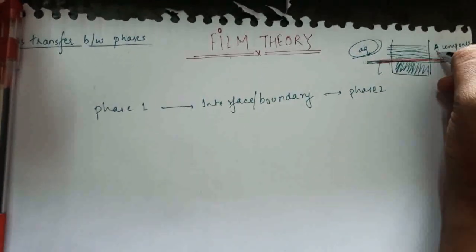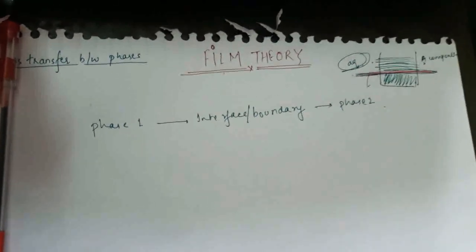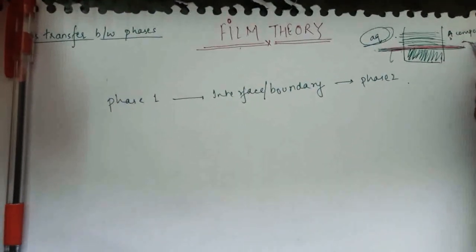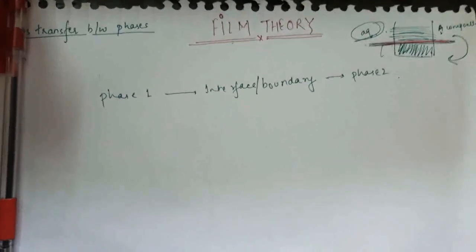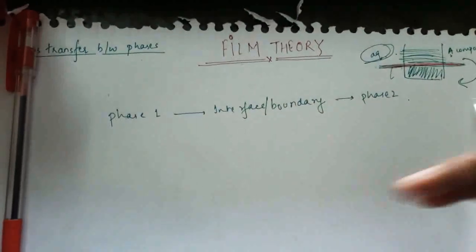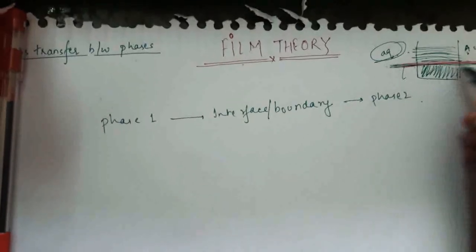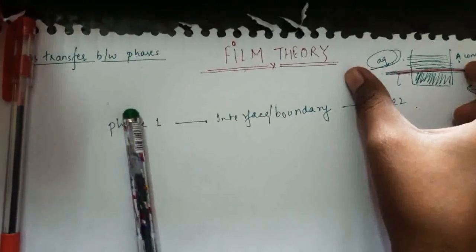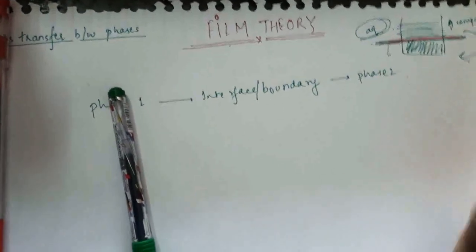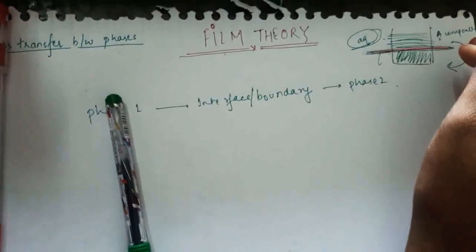If A is at higher concentration in the aqueous phase than in the organic phase, component A moves from the aqueous phase to the organic phase through the boundary. According to film theory, turbulence in each fluid dies at the phase boundary, so no significant disturbance occurs there. At the interface there is no change in concentration — concentration only changes between the phases.